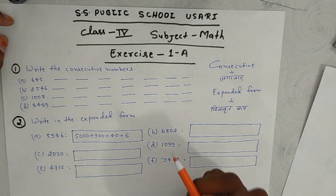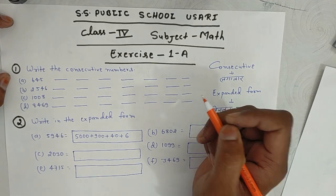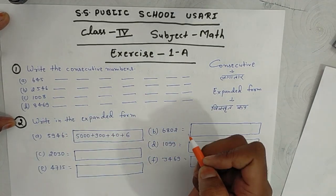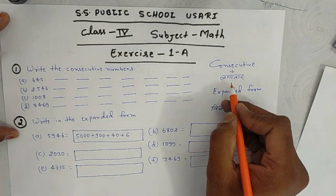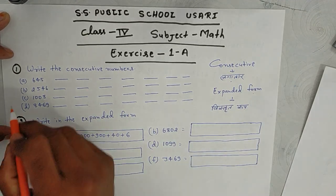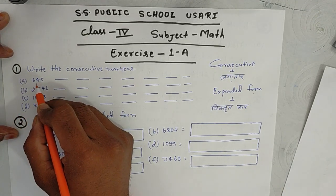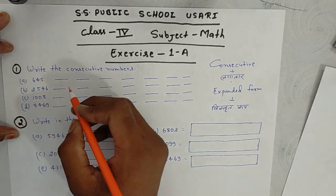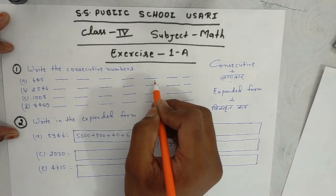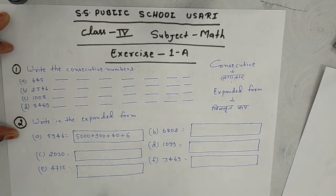This is exercise 1A. Write the consecutive number — consecutive means to write the next numbers in order. Here we have the number 645. We need to fill 7 consecutive numbers after it.